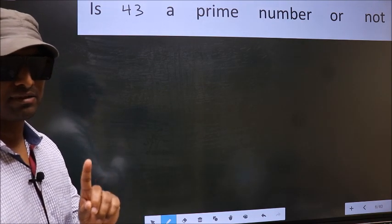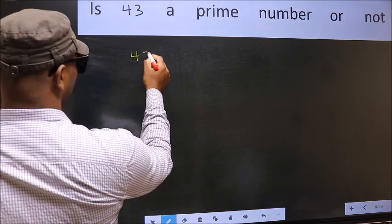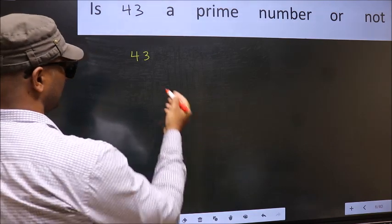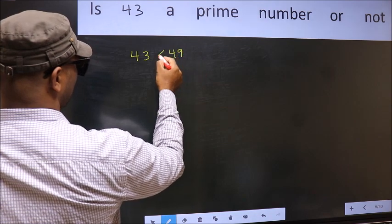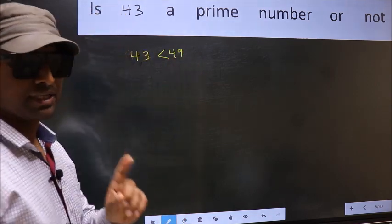For that, step 1. The given number is 43. This is close to which perfect square number? This is close to 49, a perfect square. This is your step 1.